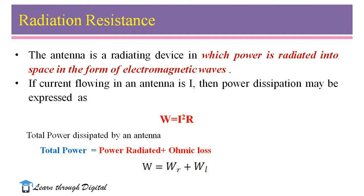The total power dissipated by an antenna can be done in two ways. One is due to power radiation, that is RR. RR is the radiation resistance.